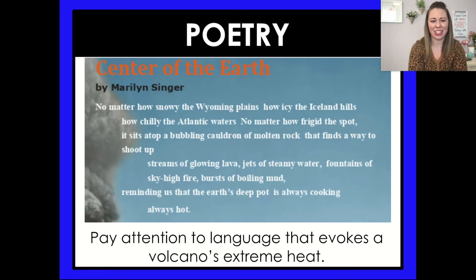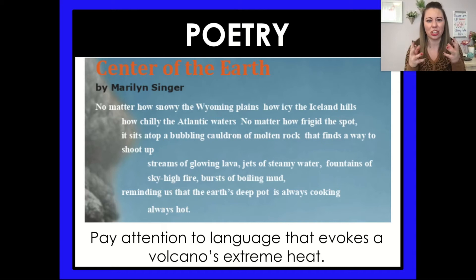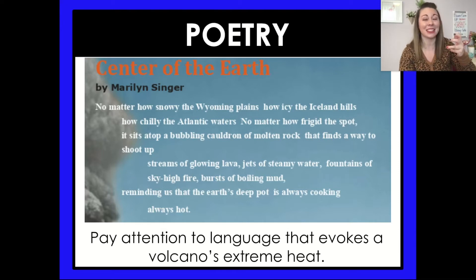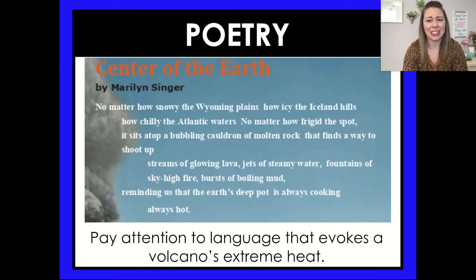Think about that again. What showed that everything's hot? It starts by saying no matter how snowy, icy, chilly, or frigid the spot, it sits atop a bubbling cauldron of molten rock — and molten means hot, melted. Streams of glowing lava — imagine it's glowing hot. Jets of steamy water — we know steam is hot. Fountains of sky-high fire — fire, that's hot. Bursts of boiling mud — boiling, we know that's hot. All these different words the author is using show you all the heat a volcano puts off, reminding us the Earth's deep pot is always cooking, always hot. Poetry is another way you could describe a topic differently than in an informational text.